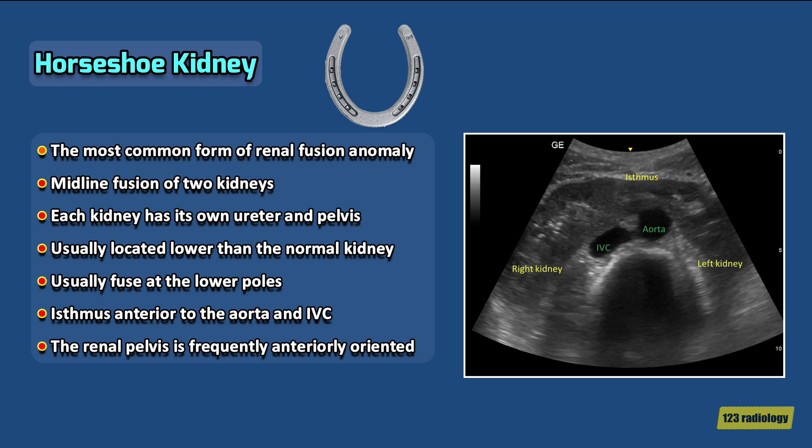Horseshoe kidney is usually ectopic and located in a lower position than the normal kidney. The two kidneys are fused through the lower poles by a connecting band of renal tissue called an isthmus. The isthmus is usually situated anterior to the aorta and inferior vena cava.